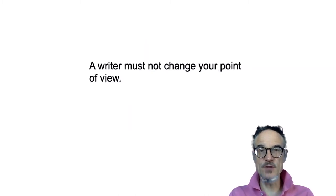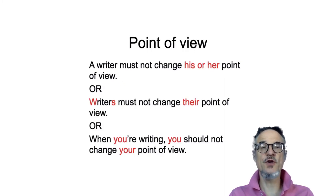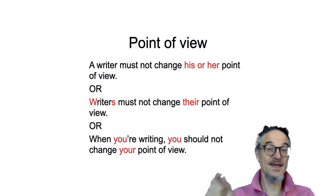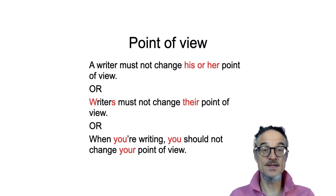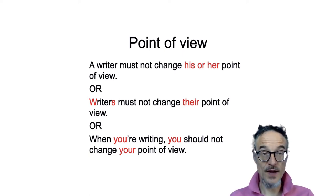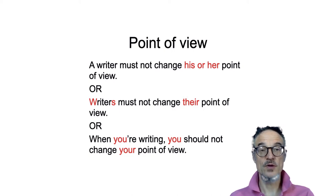Another thing on a similar subject: when you're writing, you need to think about what's called point of view. So if you're talking about 'he' or 'her', it should stay as 'her' or 'he' consistently throughout. Writers are 'they', or you could talk about 'you'. If you're talking about 'you', you need to keep 'you' throughout — so it's 'them', 'they', 'him or her', 'his or her'. So watch out.